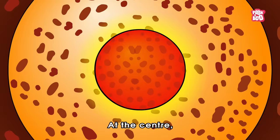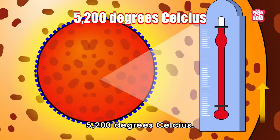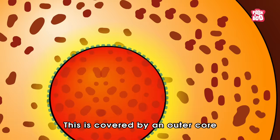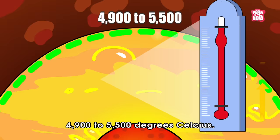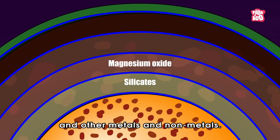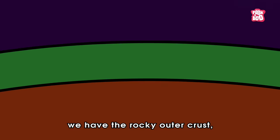Our planet is made of four layers. At the center, we can find the solid inner core with a temperature of around 5200 degrees Celsius. This is covered by an outer core with a hot liquidy texture and a temperature between 4900 to 5500 degrees Celsius. Around this is a mantle made with a mixture of silicates, magnesium oxide and other metals and non-metals.